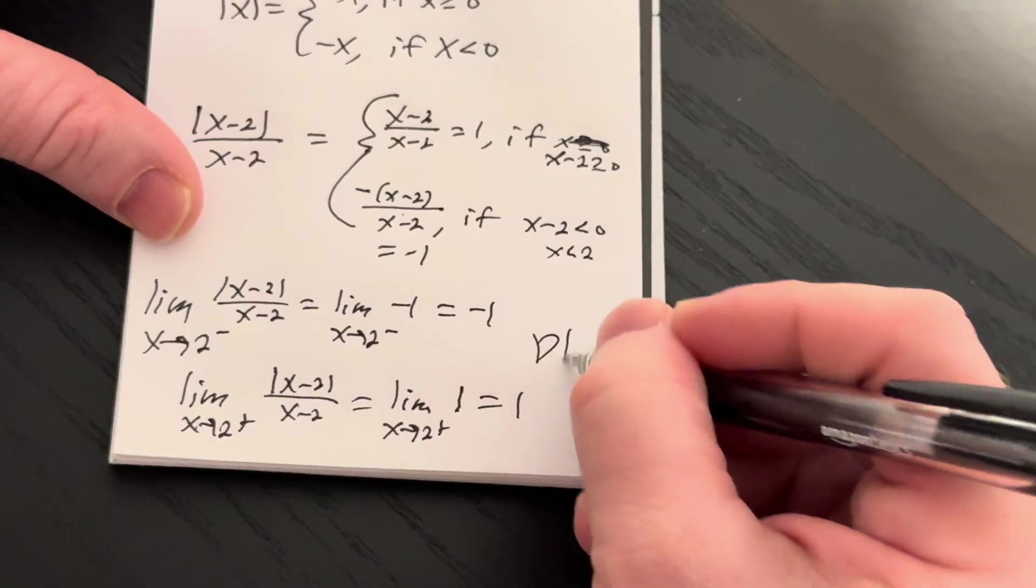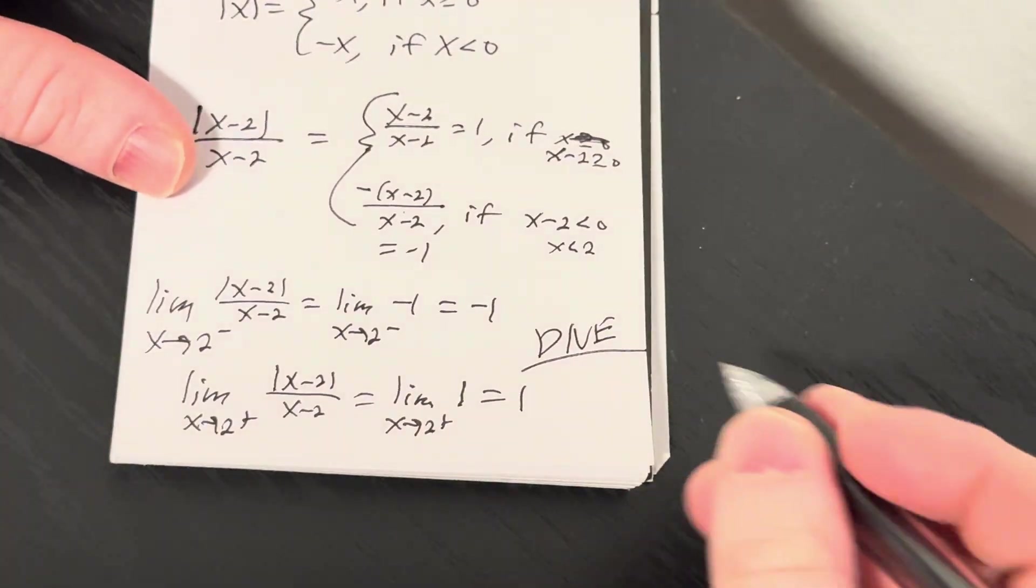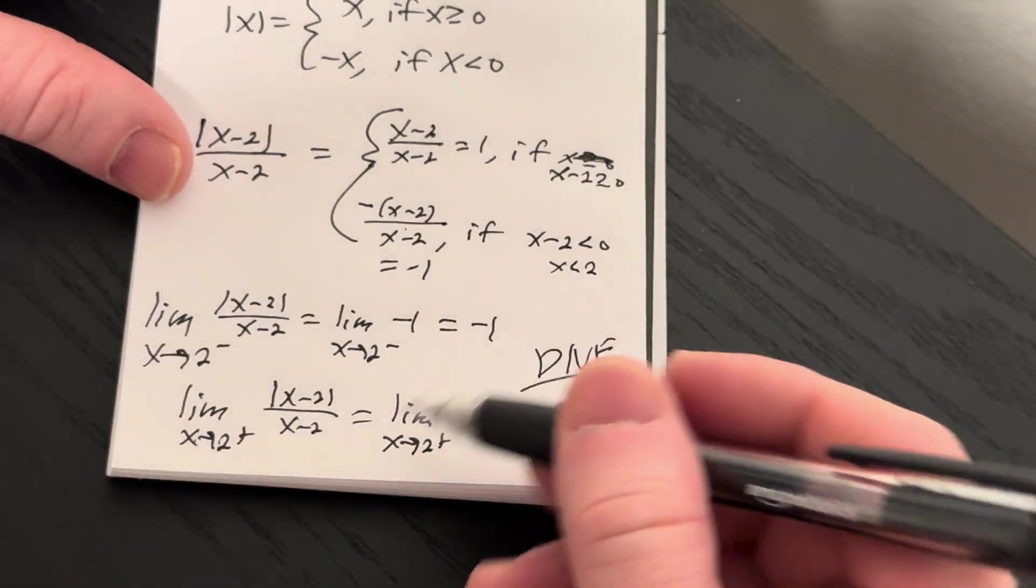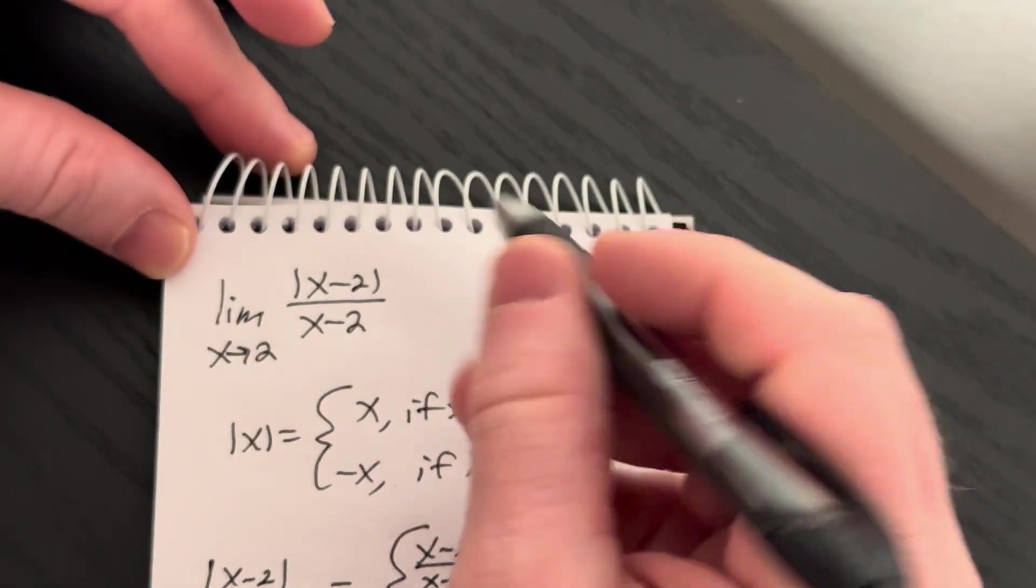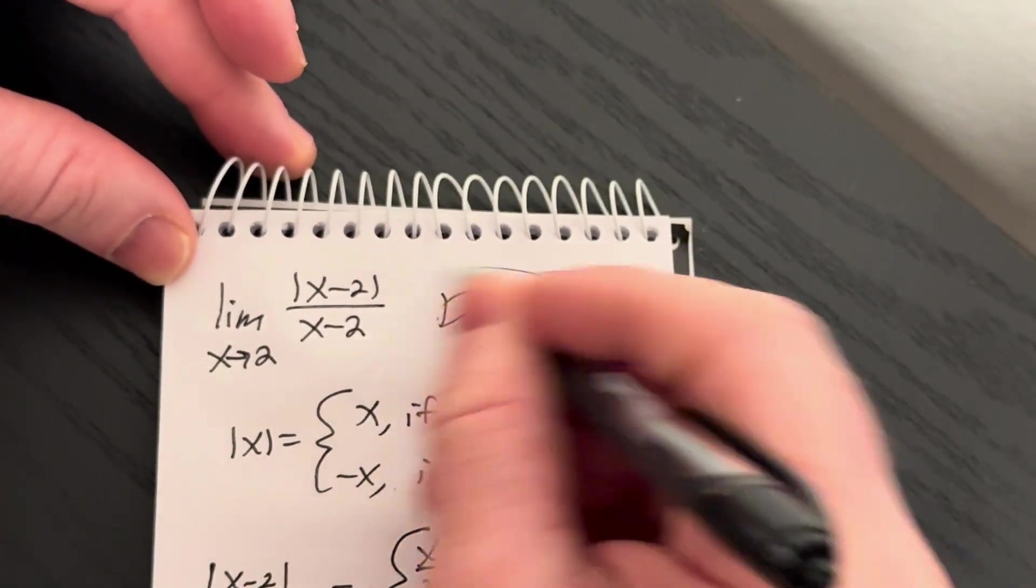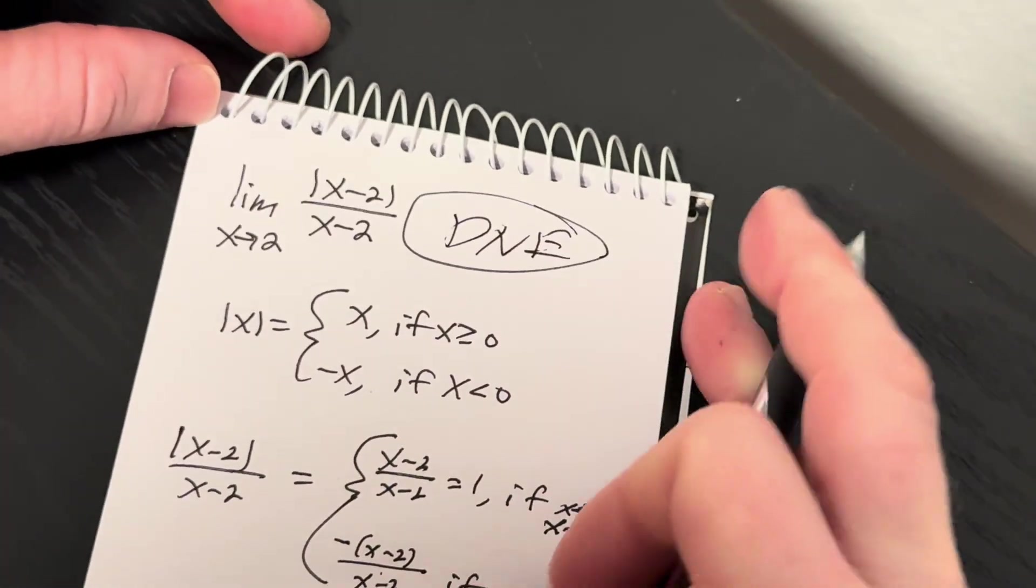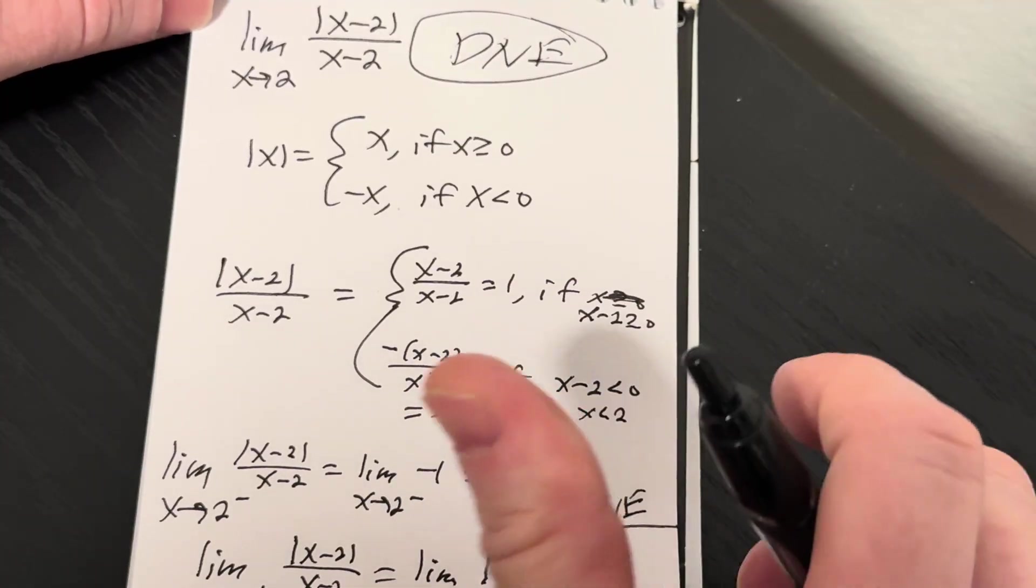So the answer is DNE, does not exist, because the one-sided limits are different. And so this limit does not exist. That is the answer to this question.